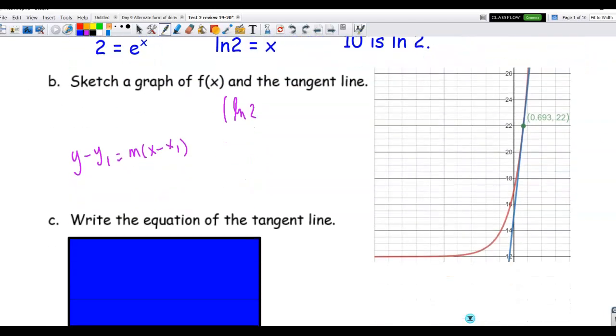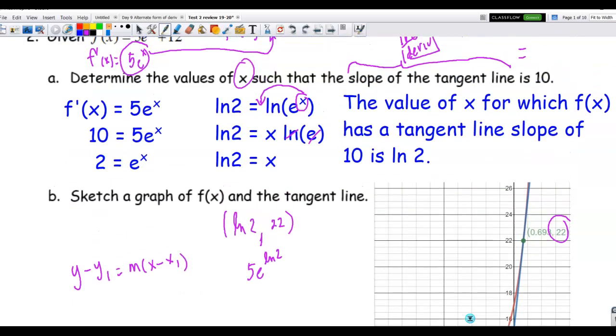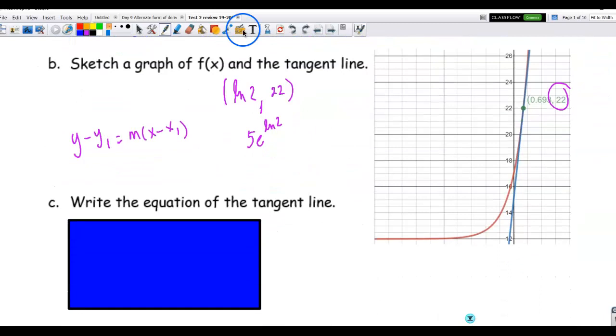So we have to generate the y value, so ln of 2. And the y value that goes with that when we substitute ln of 2 is 22. You can see that from right there, and you can figure that out by substituting 5e to the ln of 2 plus 12. So remember, e and ln undo each other, and so that leaves me with 5 times 2, which is 10. 10 plus 12 is 22, so that is my y value.